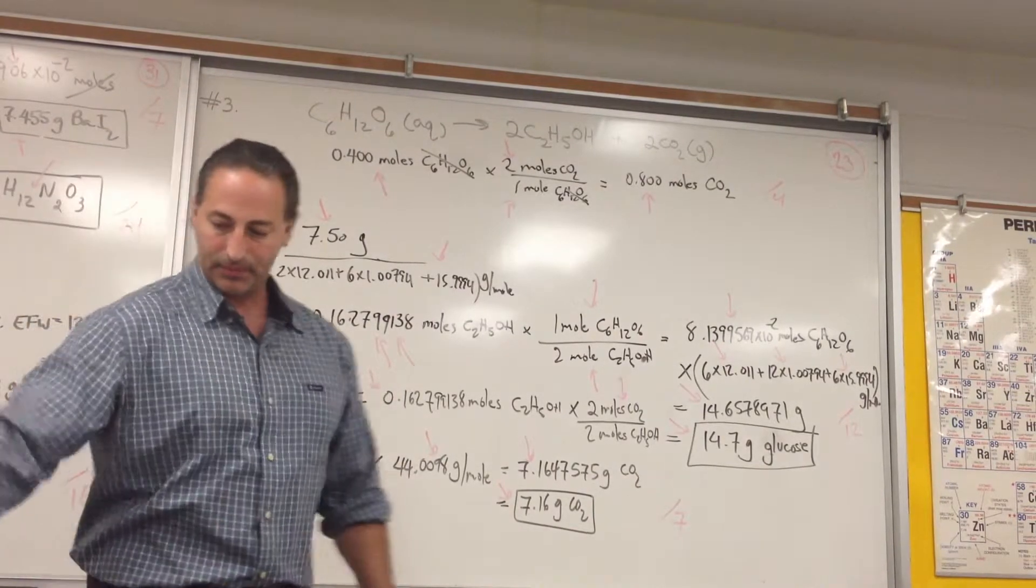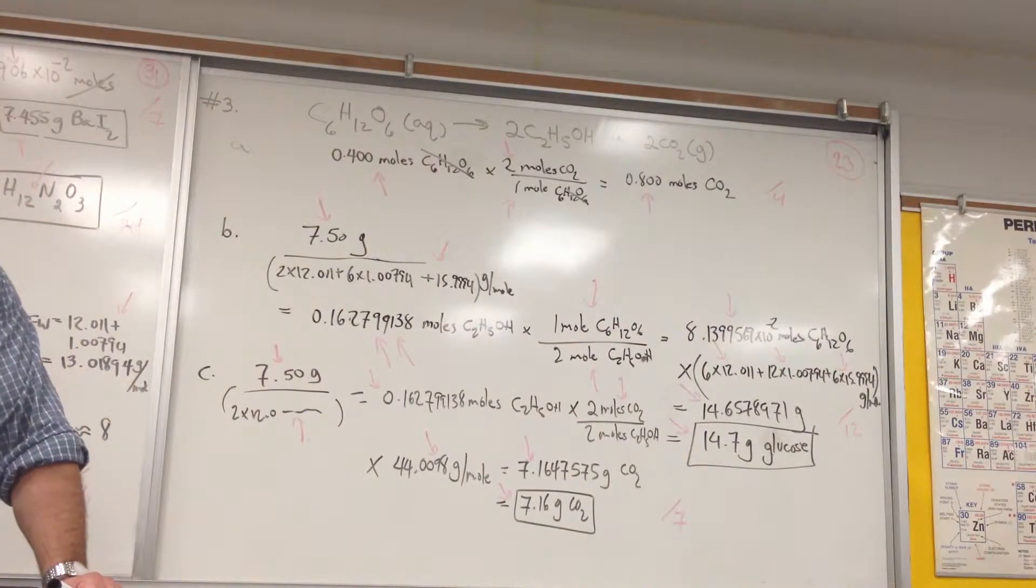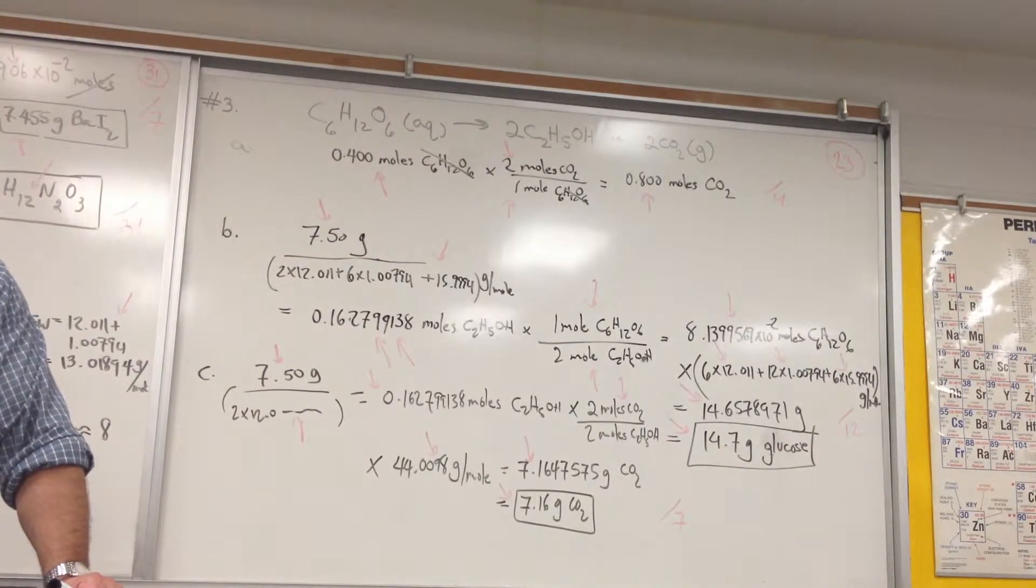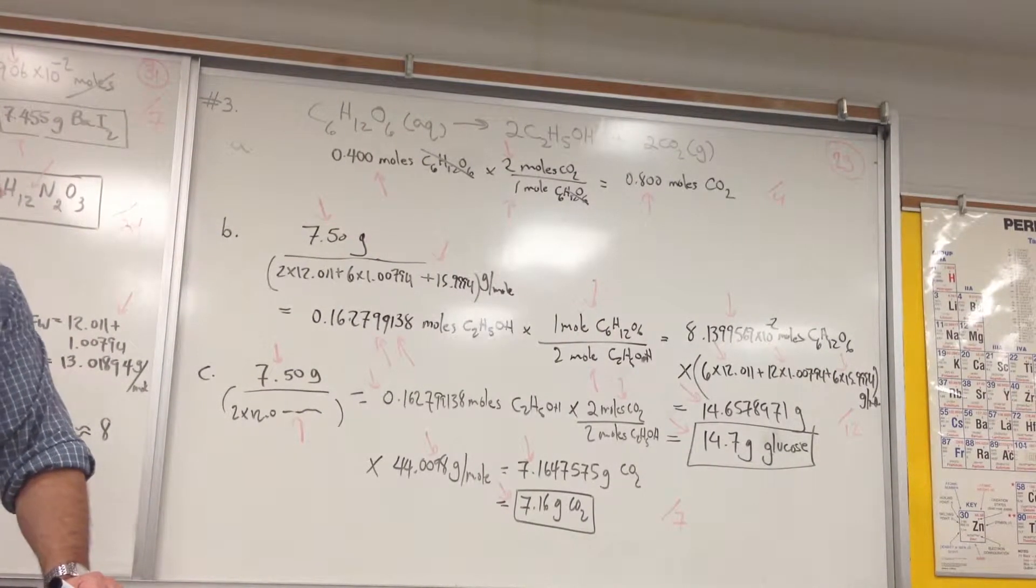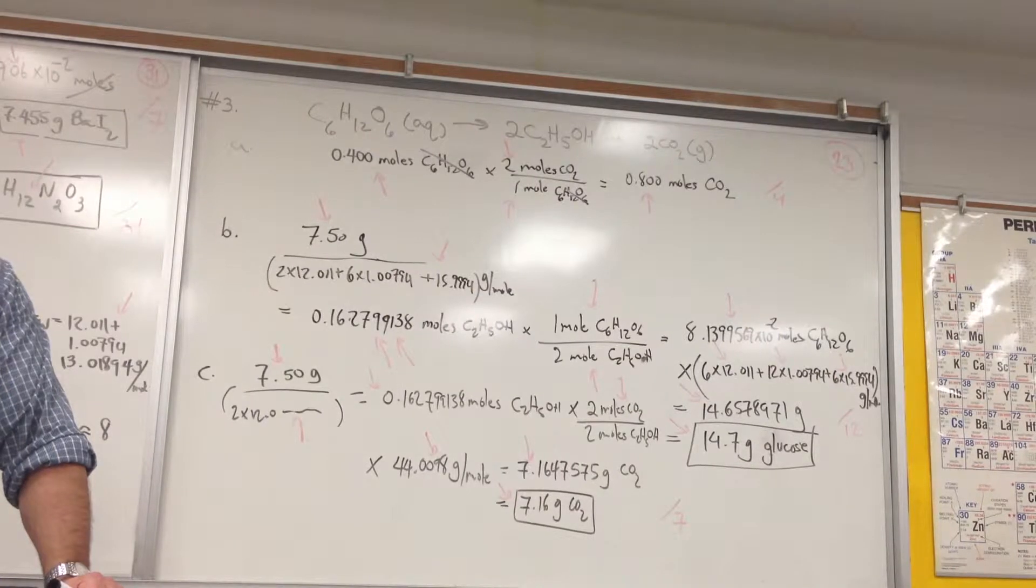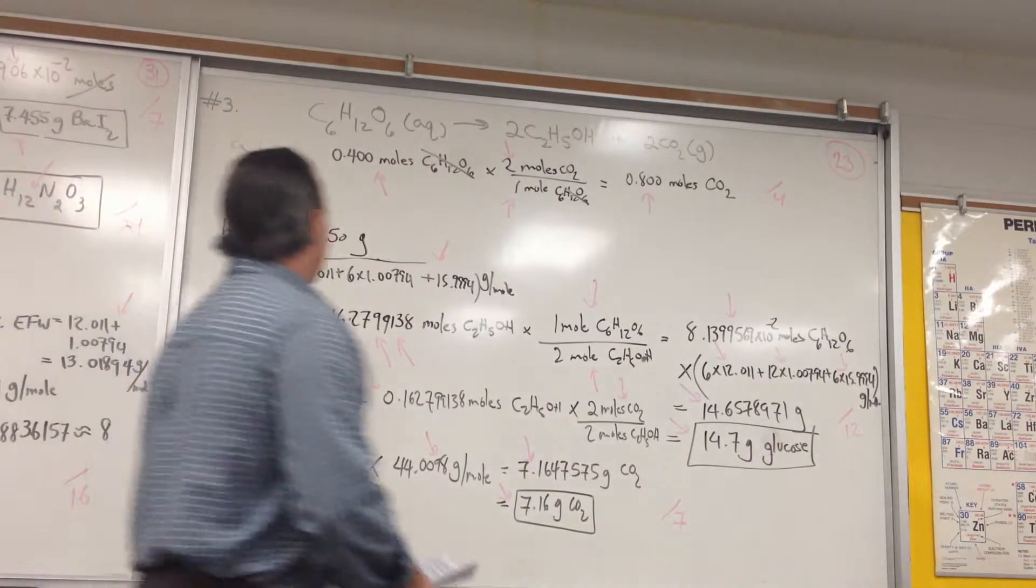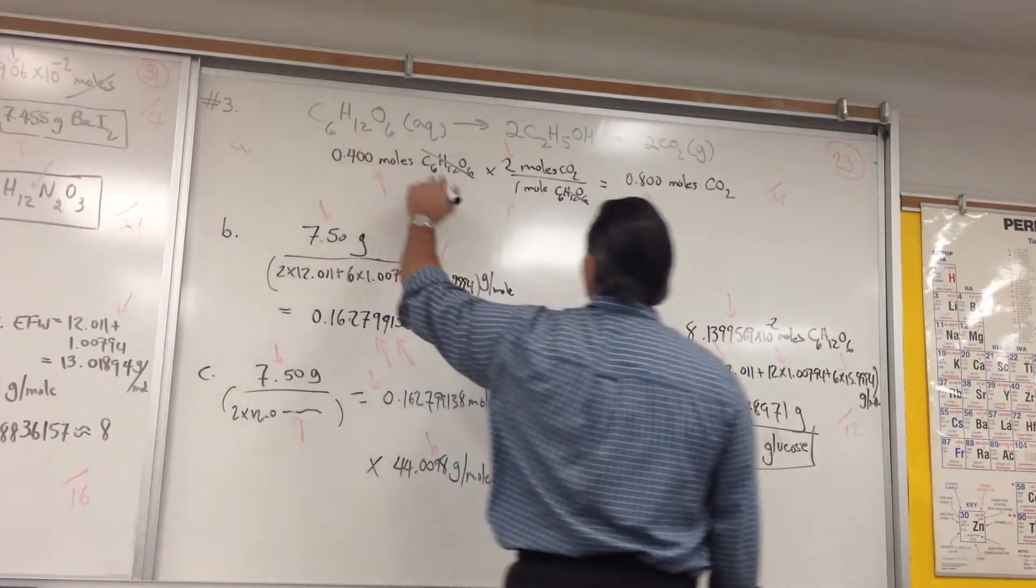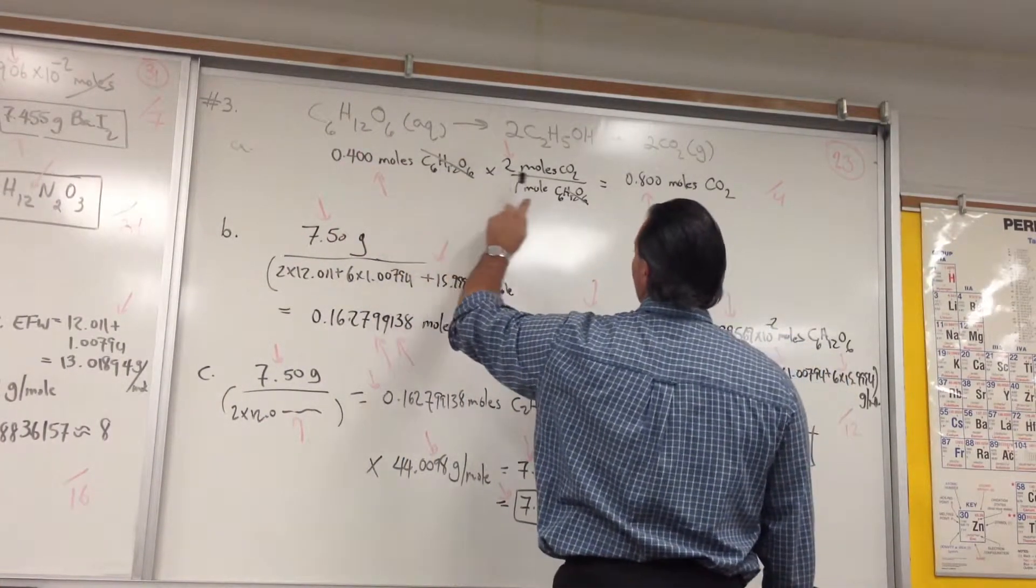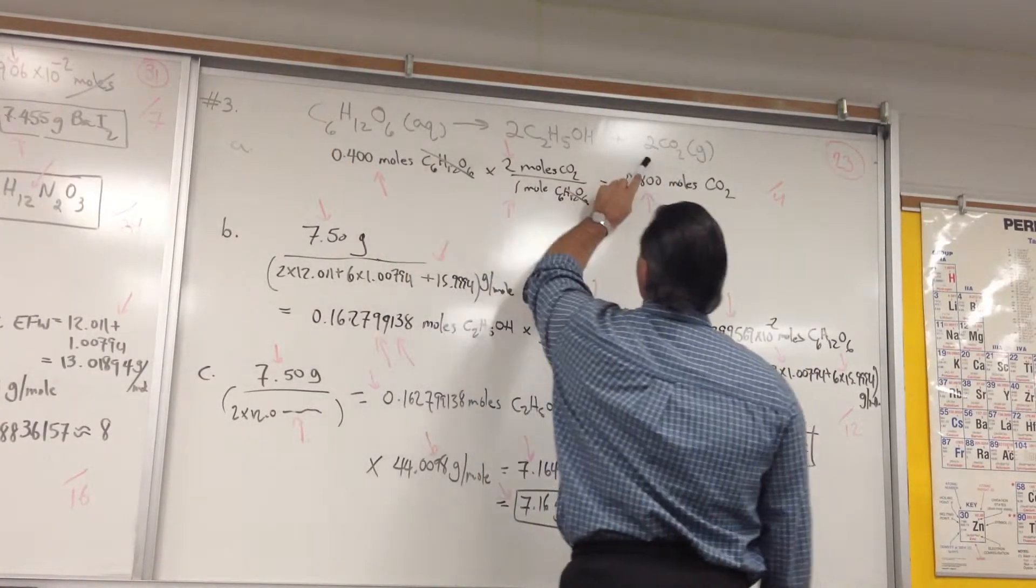The third question asks: The fermentation of glucose, C6H12O6, produces ethyl alcohol, C2H5OH, and carbon dioxide. Part A asks, How many moles of carbon dioxide are produced when 0.4 moles of glucose reacts? So, 0.4 moles of glucose reacts to form how many moles of carbon dioxide? Well, let's put stoichiometry 1 to 2.